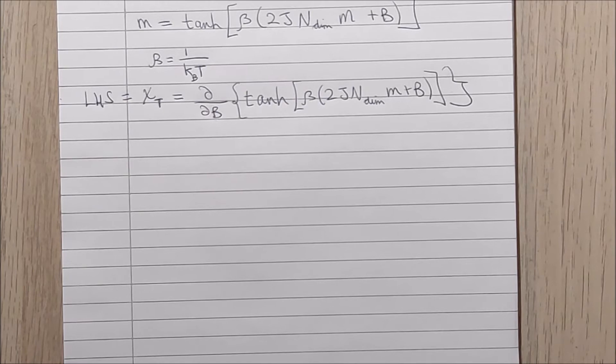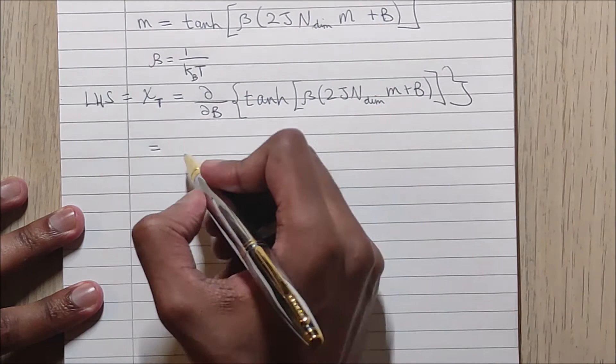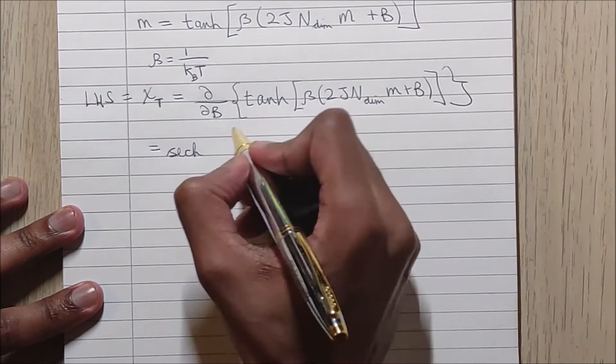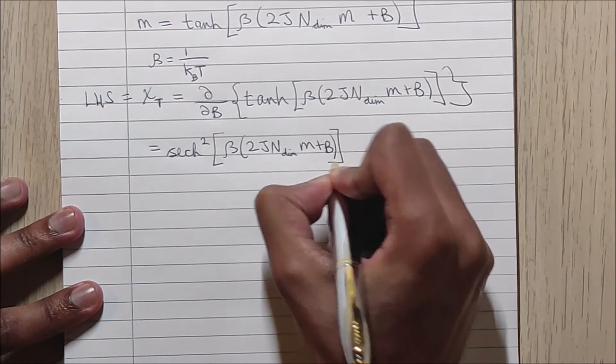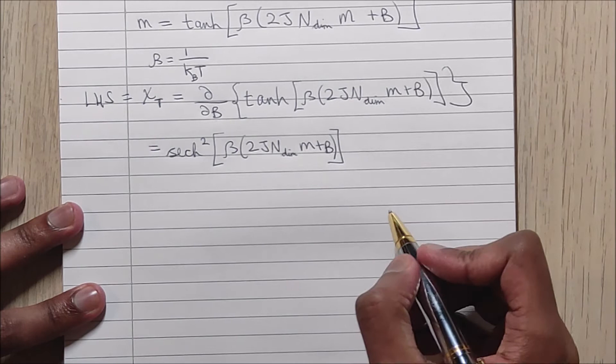So we can first differentiate this with respect to B, because we know that the hyperbolic tan becomes the following term.